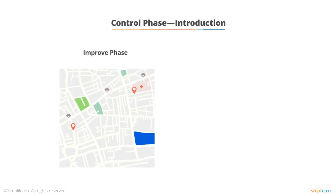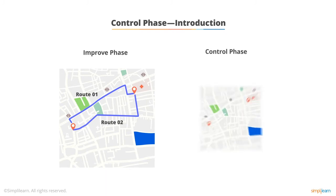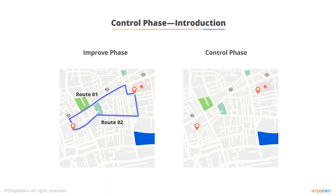If the Improve phase is like finding the most effective route or shortcuts to ensure we reach the goal successfully, the Control phase is like making sure we do not deter from the defined route.